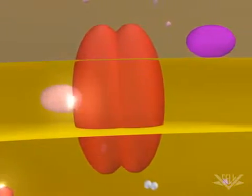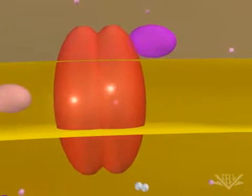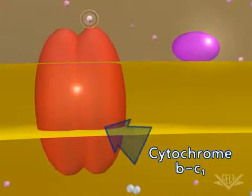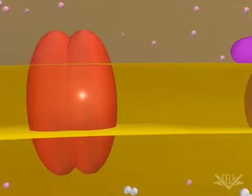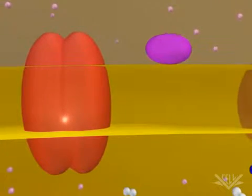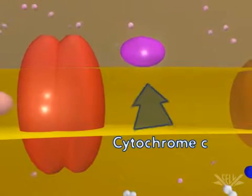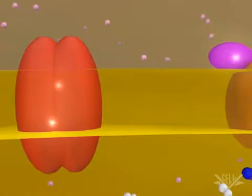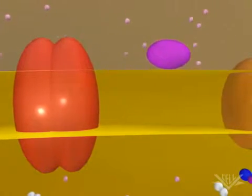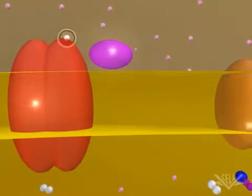Ubiquinone is called a mobile transfer molecule because it moves the electrons to the cytochrome BC1 complex. Each electron is then passed from the cytochrome BC1 complex to cytochrome C, which accepts each electron one at a time. One hydrogen ion is pumped through the complex as each electron is transferred.